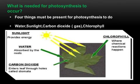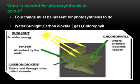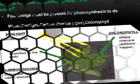Chlorophyll is where the chemical reaction happens. Chlorophyll is the green substance present in a leaf, due to which the color of the leaf is green.